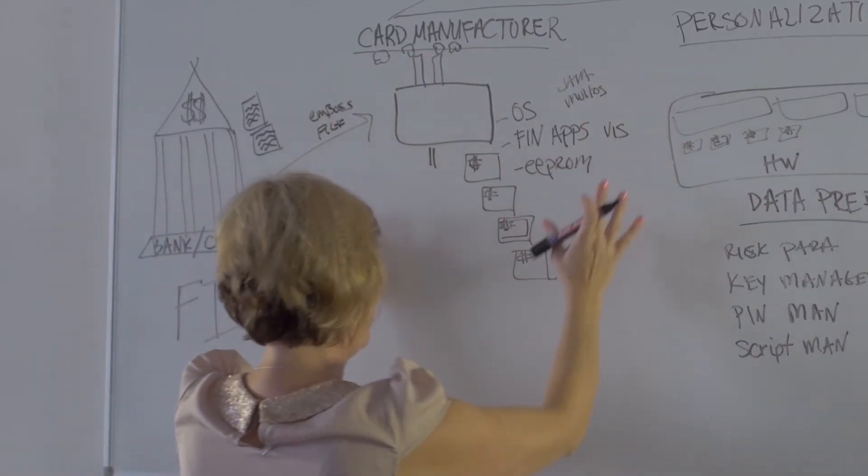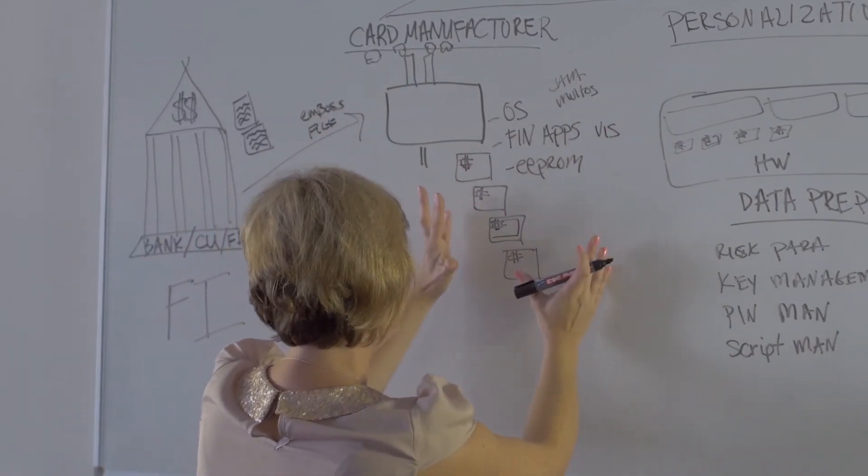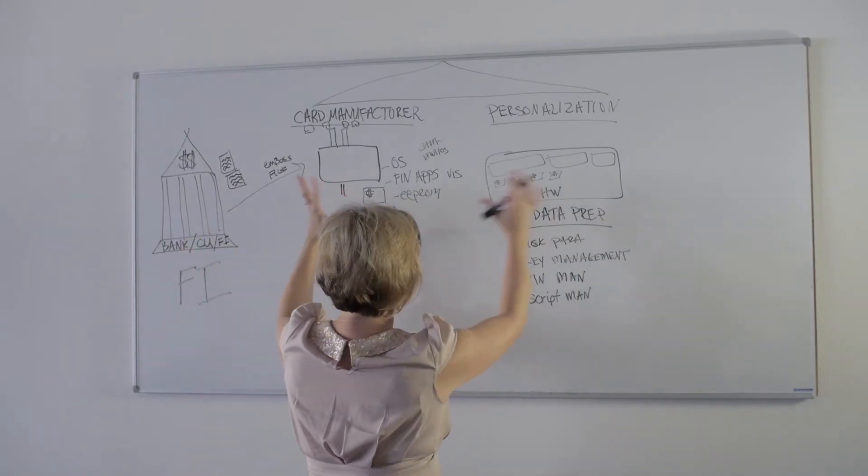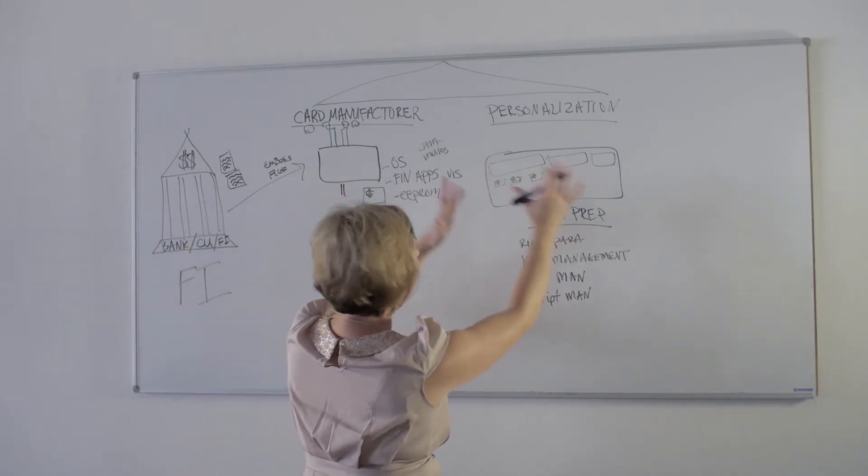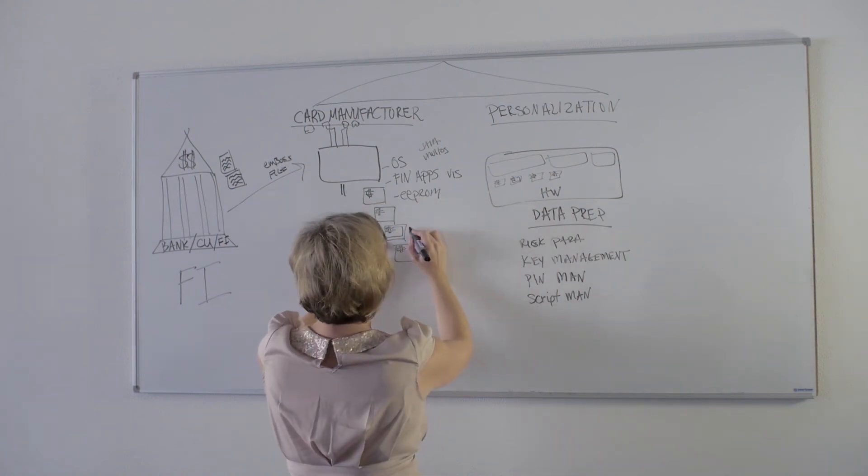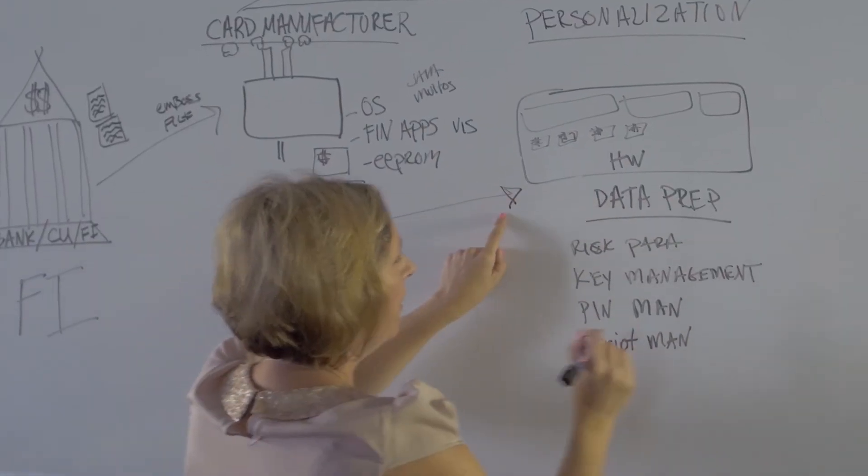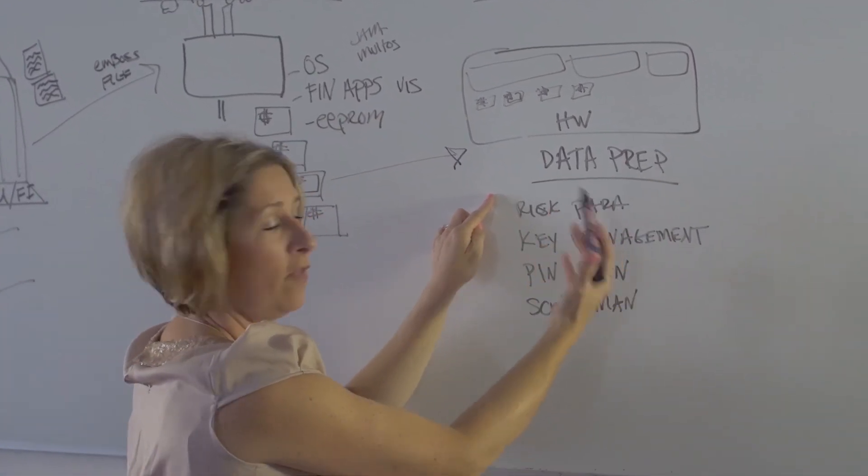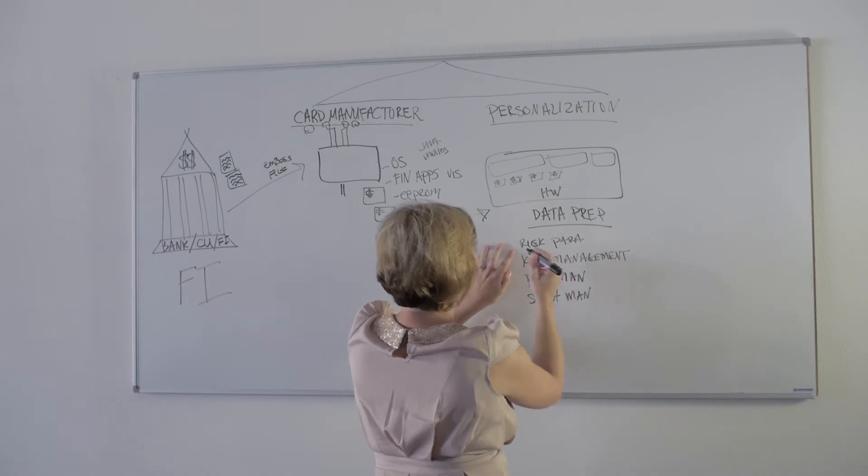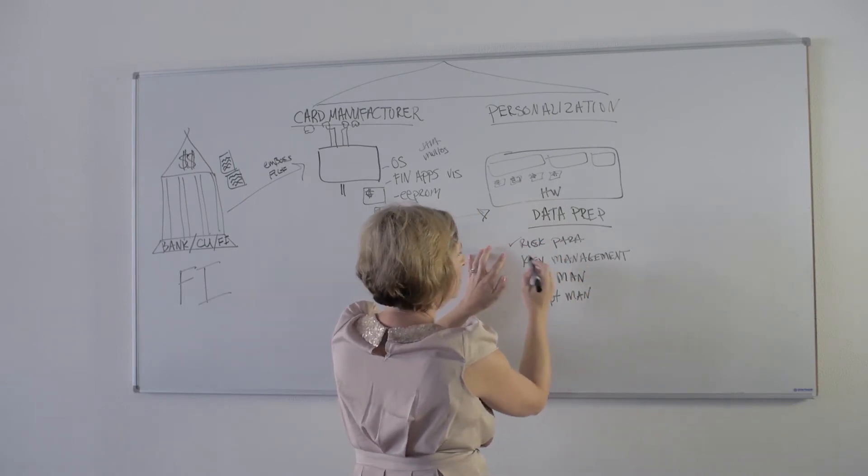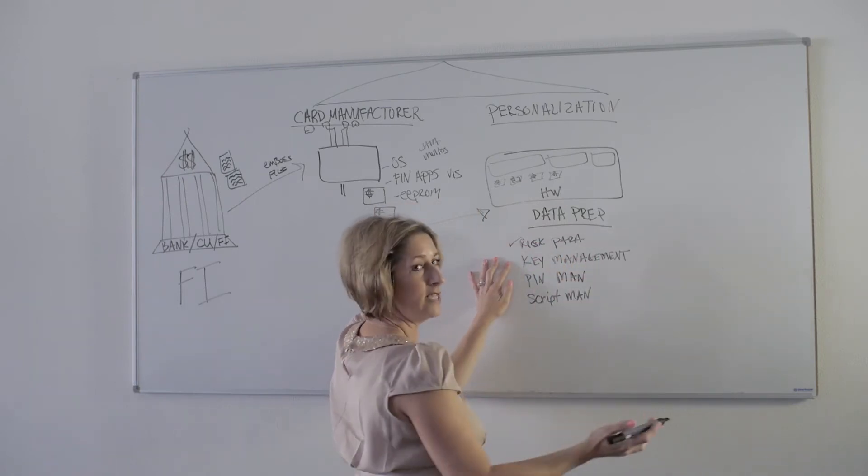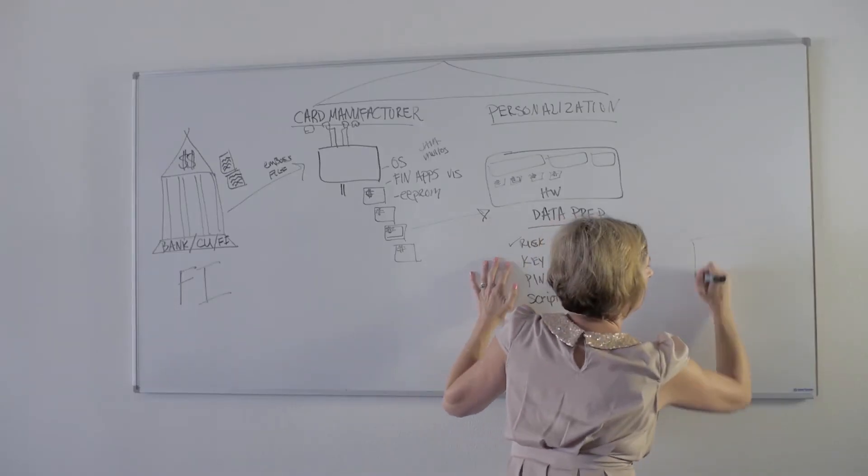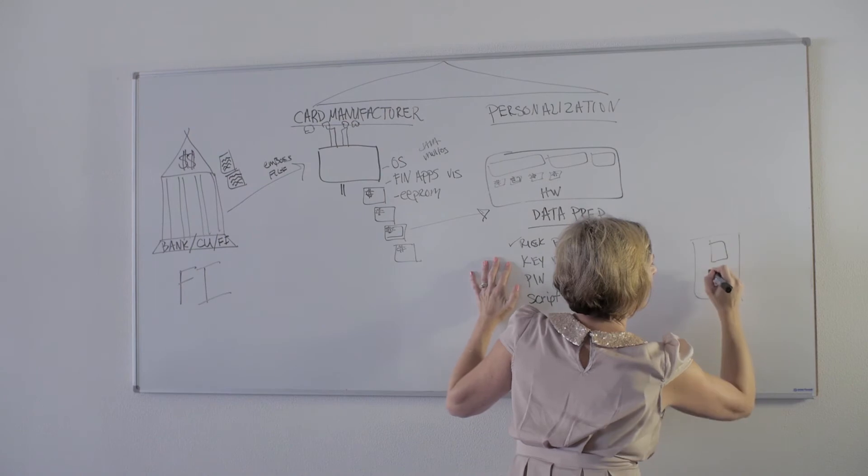They manufacture card plastics and they assign cardholder portfolio to them. Could be under the same roof, could be another partner. Then that card with the embossing file is sent over to the personalization bureau. The personalization bureau performs a data preparation on that card plastic which manages risk parameters, which basically tells that card plastic how to perform, how to function in a POS environment. So once that card is out in public...